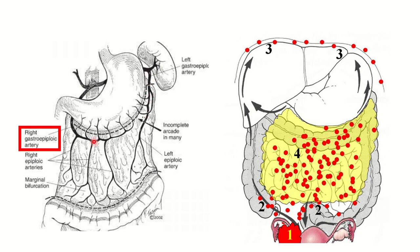These arteries are the gastroepiploic arteries. The right gastroepiploic artery is a branch of the gastroduodenal artery. On the other hand, the left gastroepiploic artery arises from the splenic artery.